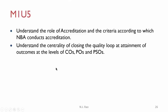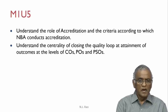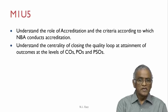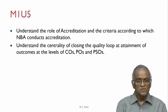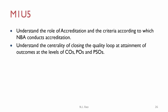Coming to the next unit, M1U5, which will attempt to facilitate understanding of the role of accreditation and the criteria according to which NBA conducts accreditation, and understand the centrality of closing the quality loop at the attainment of outcomes at the levels of COs, POs, and PSOs. Those will be the expected learning outcomes of the next unit. Thank you very much.